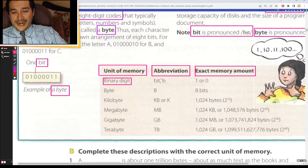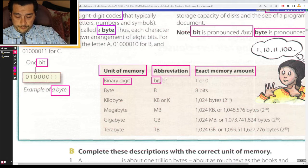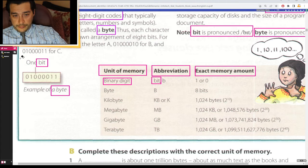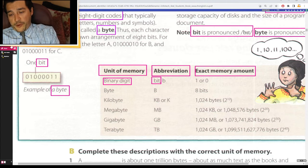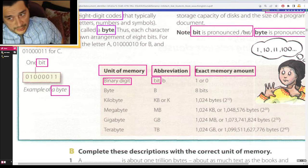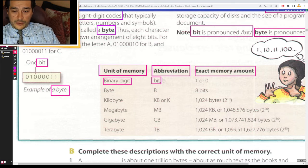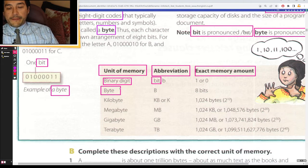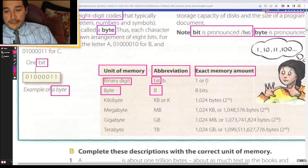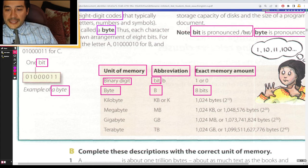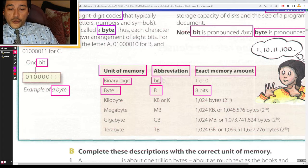So, a binary digit is a bit, or lowercase b. For example, the exact memory is 1 or 0, only 1s and 0s. A byte, capital B, is 8 of those bits. So when you have 8 bits, you create 1 byte.